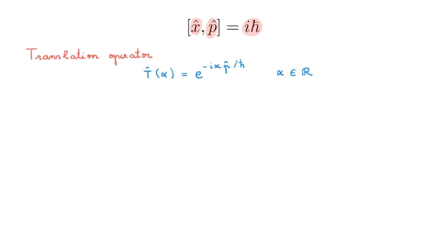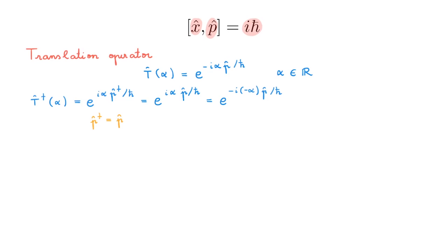Whenever we introduce a new operator we need to understand some of its properties. The most important one is typically the adjoint. T†(α) = e^(iαp†/ℏ). Since the momentum operator is Hermitian, p† = p, giving us e^(iαp/ℏ) = e^(−i(−α)p/ℏ) = T(−α). So the adjoint of T(α) is T(−α), and an immediate consequence is that the translation operator is not Hermitian.